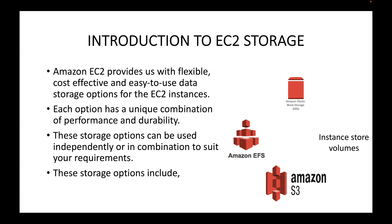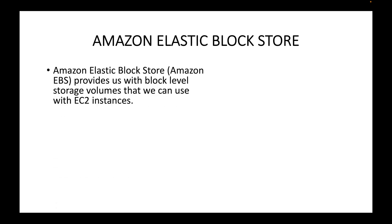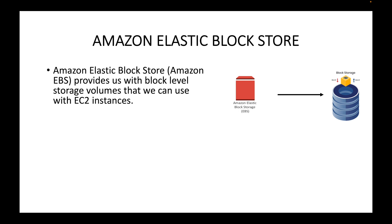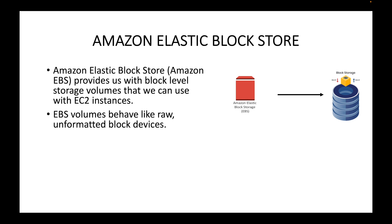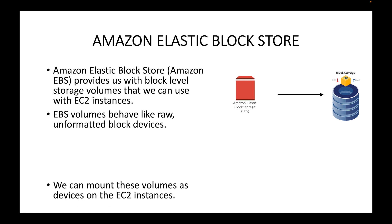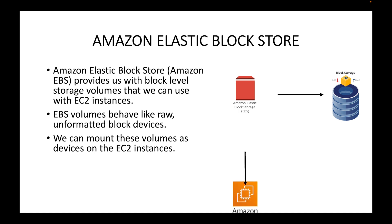In this session we will specifically talk about EBS storage; other storage options will be covered in upcoming sessions. EBS stands for Elastic Block Store and provides block-level storage that can be used with EC2 instances. Generally, storage types include object-level storage, block-level storage, and tape drives. EBS supports block-level storage and can be attached to EC2 instances, where it behaves like a raw unformatted block device.